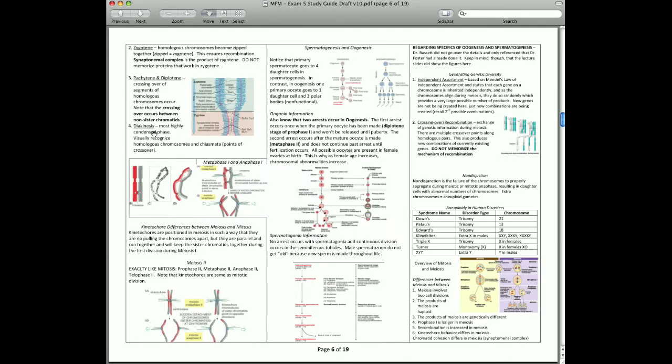Diakinesis is the final stage. In this stage, it's the most condensed. You can visually recognize the chiasmata, the points of crossing over, and the homologous chromosomes. You can see down here, this is the chiasmata, this X point. You can see an actual chromosome crossing over here.